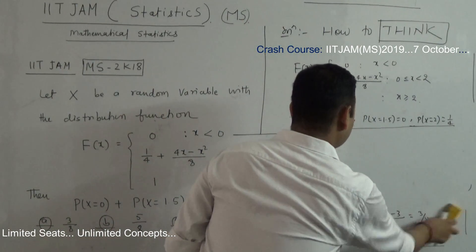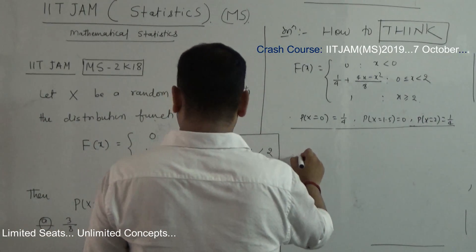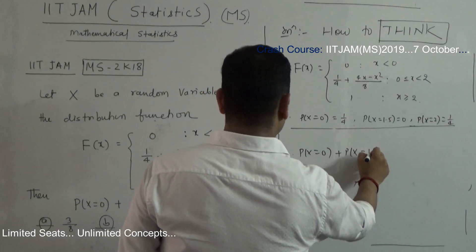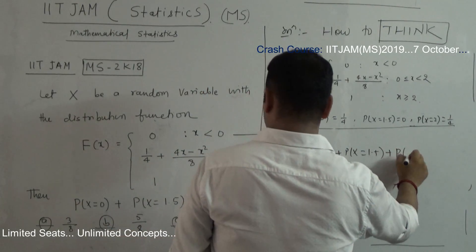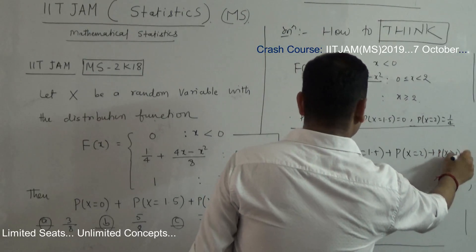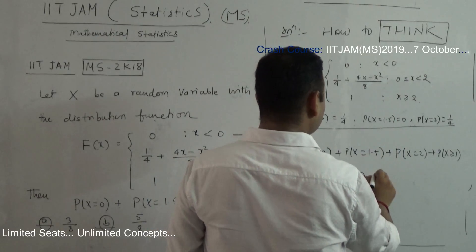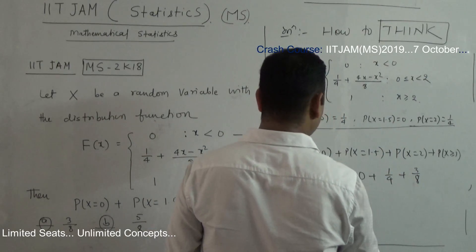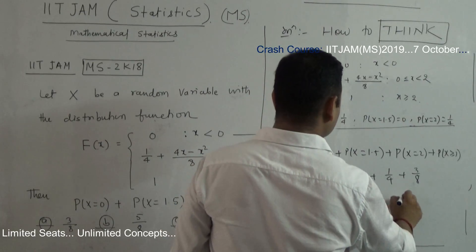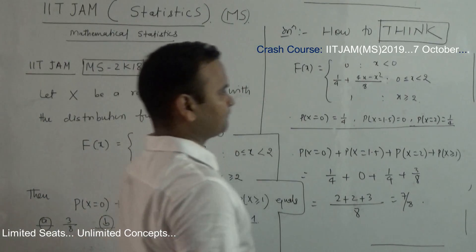Now let's add everything together. You asked me: probability of X equal to 0, plus probability of X equal to 1.5, plus probability of X equal to 2, plus probability of X greater than or equal to 1. That is 1/4 + 0 + 1/4 + 5/8. Taking 8 as the common denominator: 2 + 0 + 2 + 3 = 7. So the answer is 7/8.